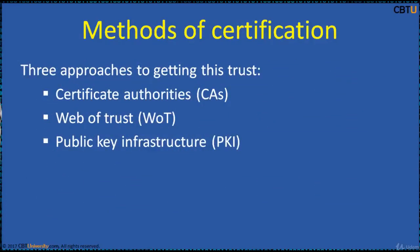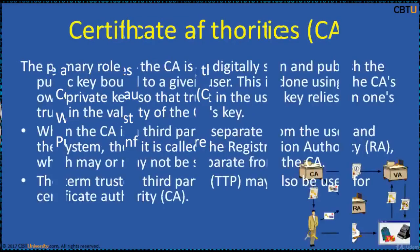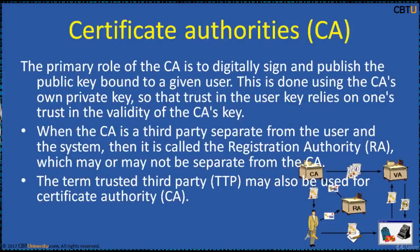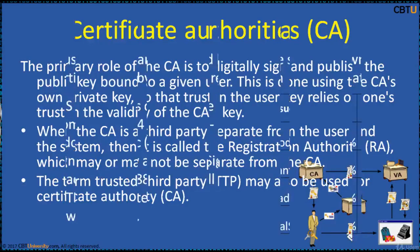There are three approaches to getting trust: Certificate Authorities, Web of Trust, and Public Key Infrastructure. The primary role of a CA is to digitally sign and publish the public key bound to a given user, done using the CA's own private key, so that trust in the user key relies on one's trust in the validation of the CA's key. When the CA is a third party separate from the user and the system, it is called the Registration Authority, which may or may not be separate from the CA. The term 'trusted third party' may also be used for a Certificate Authority, and PKI is itself used as a synonym for CA implementation.